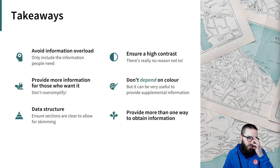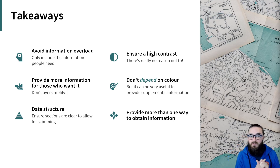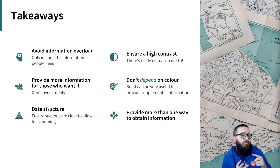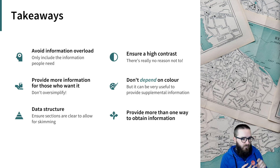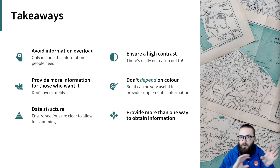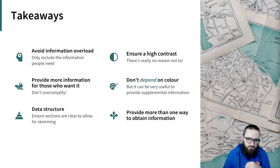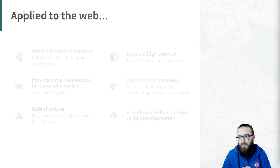So what can we take away from this look into maps? Maps avoid information overload — they only include the information that people need. They provide more information for those who want it; they're not oversimplifying. There's a clear data structure ensuring that sections are clear to allow for skimming for places. They ensure high contrast. They don't depend on colour, but it is used to provide supplemental information. And there's more than one way to find information.